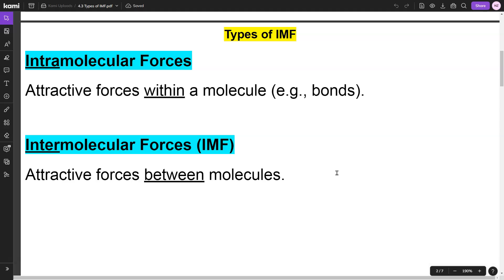Now, intermolecular forces are the attractions that occur between molecules. Just like we have the interstate that you drive on to go from Illinois to Wisconsin, intermolecular forces are those attractive forces that occur between molecules. For example, you can have two water molecules—intermolecular forces are the attractive forces occurring between those two water molecules.